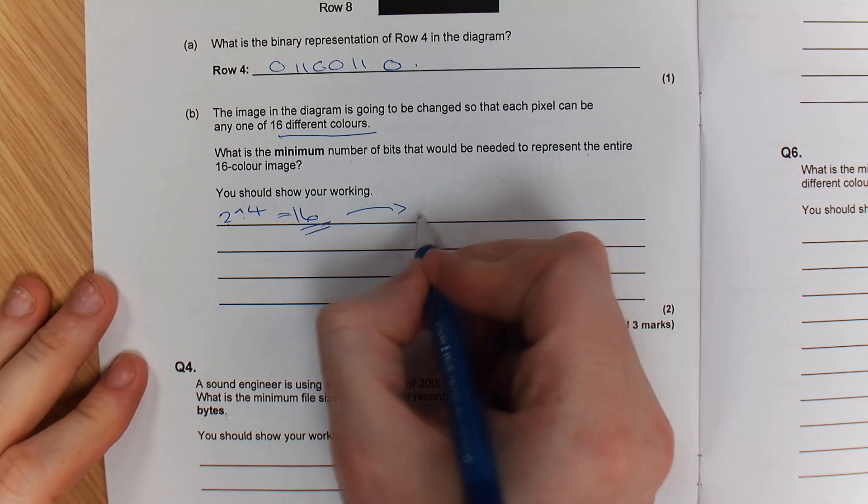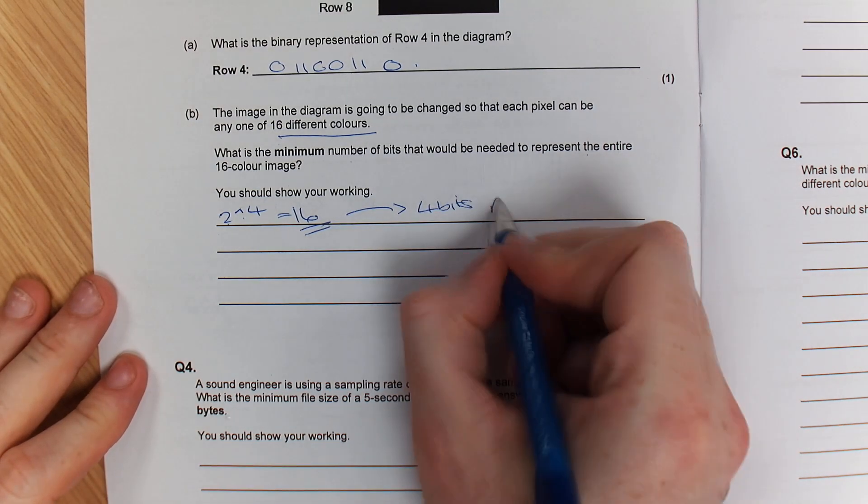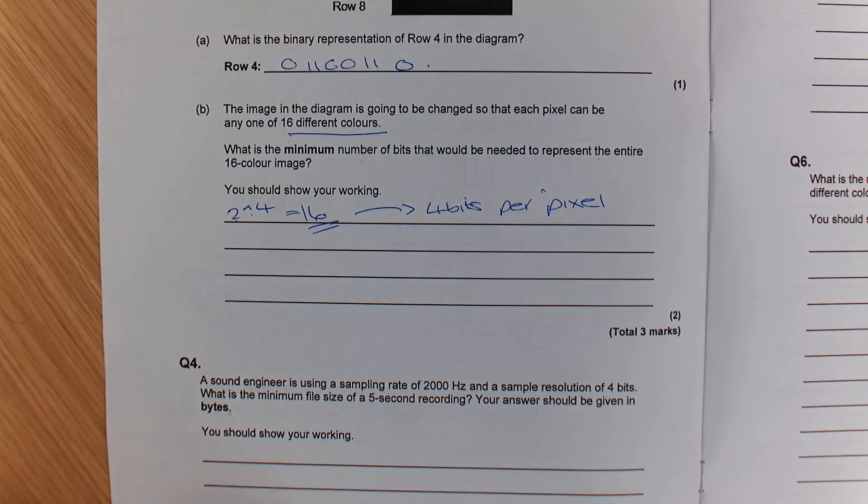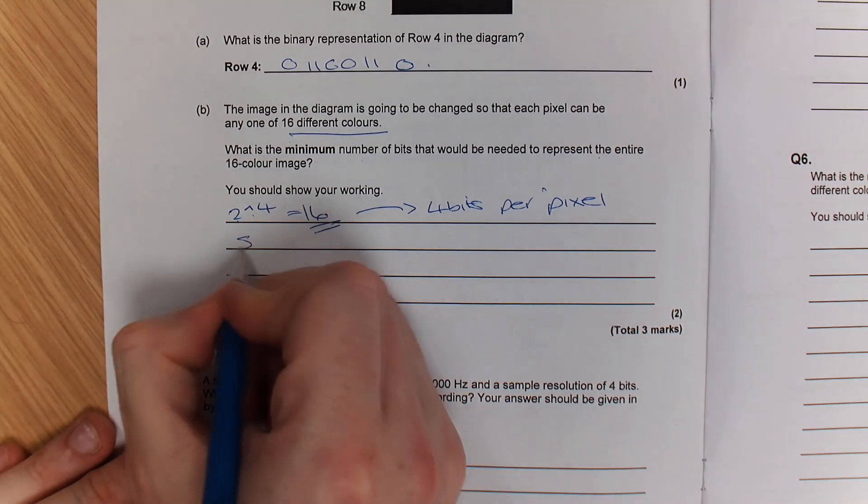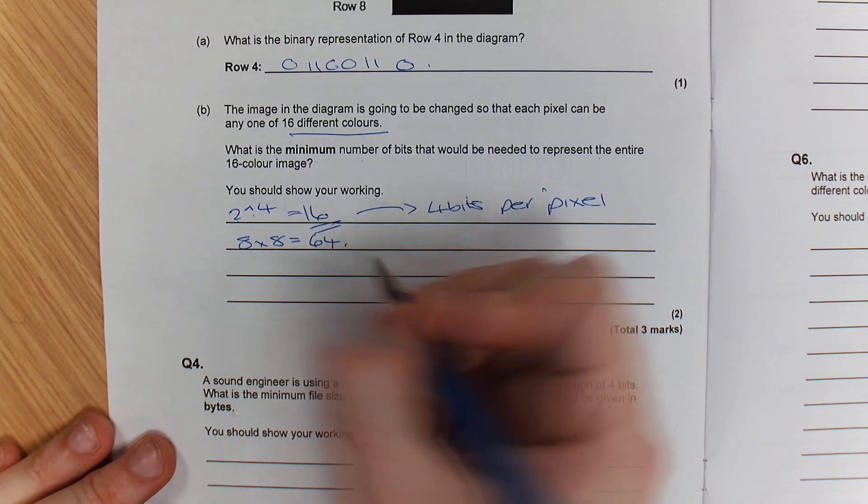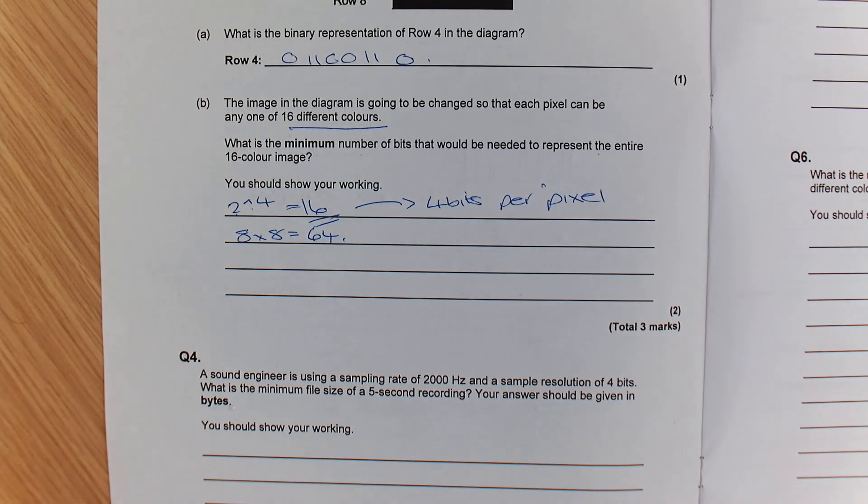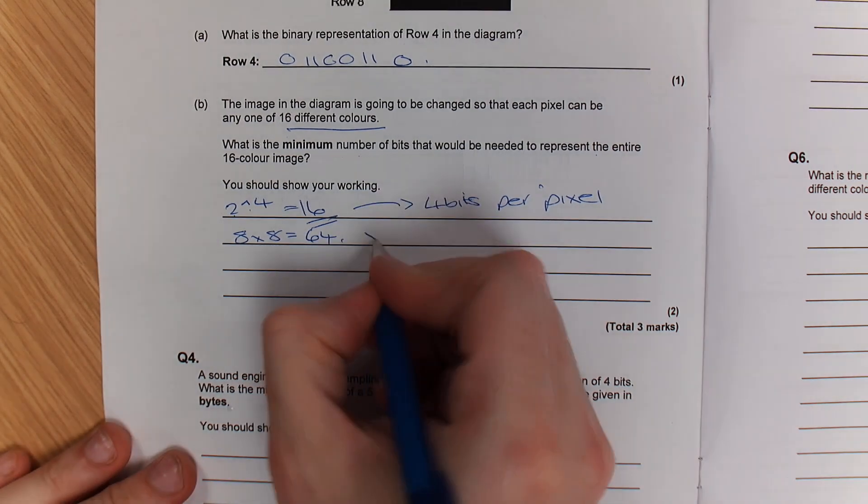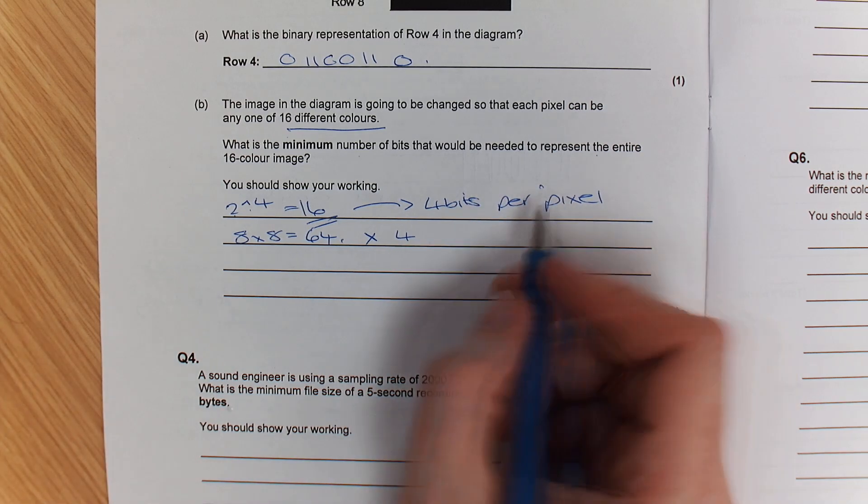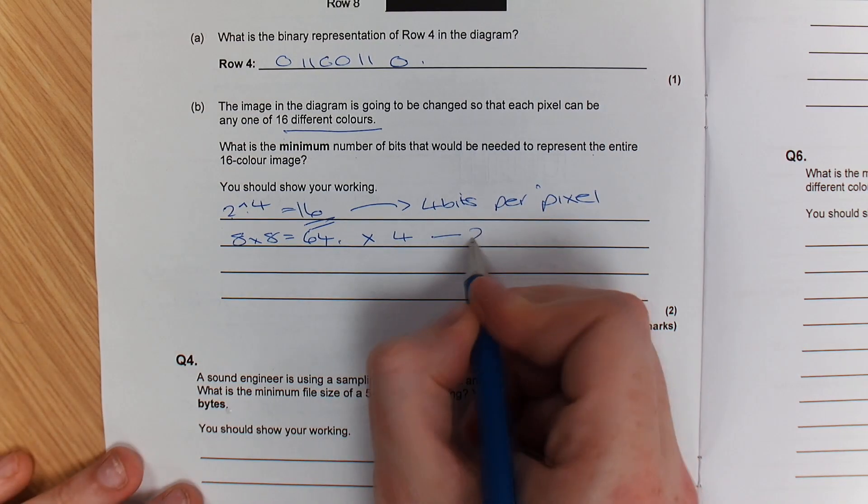So moving across there, 4 bits are needed per pixel. So if I've got 4 bits per pixel, what's the size of the image? How do I get there? 8 pixels by 8. Yeah, so 8 times 8 gives you 64. Then what have I got to do with that 64? Times it by 4, which is the bit depth. Yeah, and that's going to give you your answer of 256. Good.